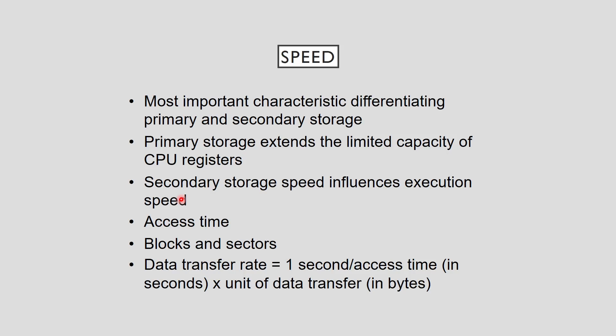Registers in the CPU are storage locations for instructions and data. Their location enables zero wait states for access, but CPUs have a limited number of registers — far fewer than needed to hold typical programs and data. Speed is also an important issue for secondary storage, and many information system applications need access to large databases to support ongoing processing. Program response time in these systems depends on secondary storage access speed, which also affects overall computer performance. Storage device speed is called access time.